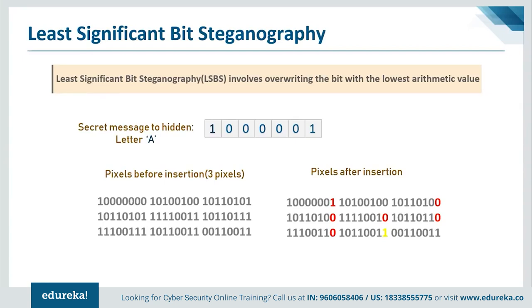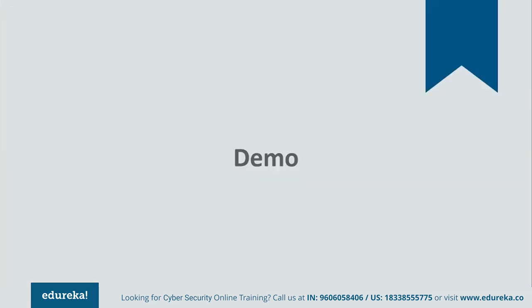To summarize LSB steganography: every pixel can be represented using different color models — here we use RGB, with each value represented using 8 bits. The number of bits determines the color the pixel displays. In binary format, we have the least significant bit and most significant bit. Changing the MSB makes larger changes to our final value, but changing the LSB does not. So we make use of this fact — LSB steganography replaces the LSBs in the cover object with the binary bits of the secret message. Now you know the theory; it's time to perform a small demo.